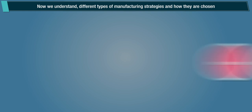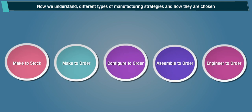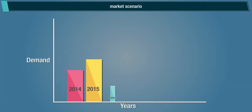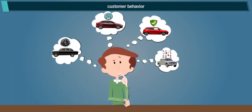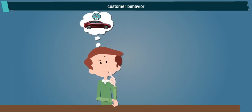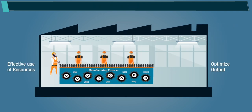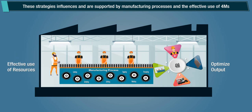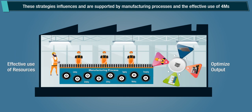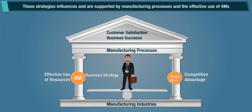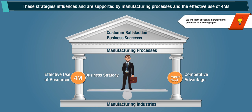Now we understand different types of manufacturing strategies, and how they are chosen based on the product and its production complexities — market scenario, customer behavior, and balancing between demand and supply. These strategies influence and are supported by manufacturing processes and the effective use of the 4Ms. Note: we will learn about key manufacturing processes in the incoming topics.